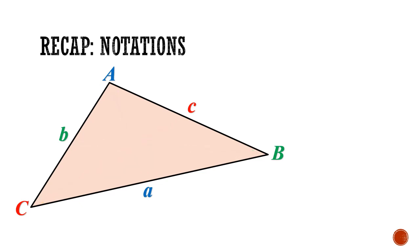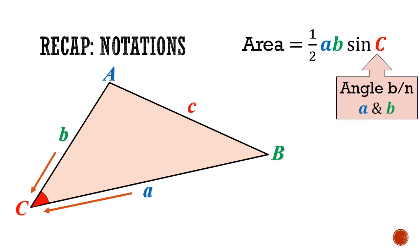We also learned in the last lesson the trigonometric formula for finding the area of a triangle, which is half AB sine C, where C is the angle between sides A and B.